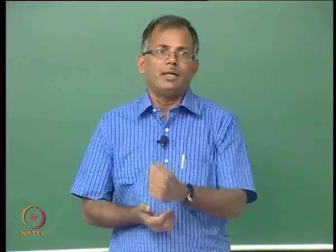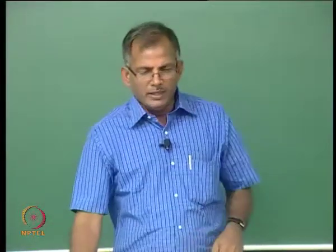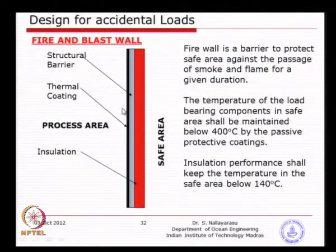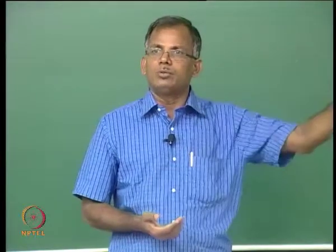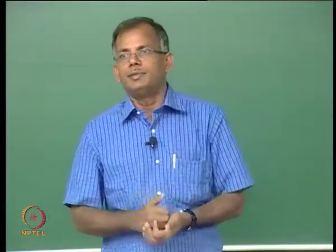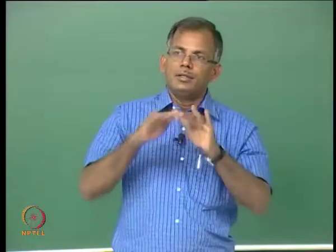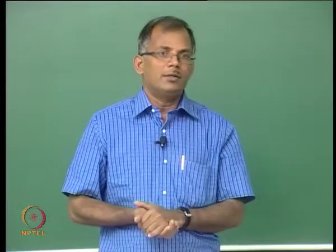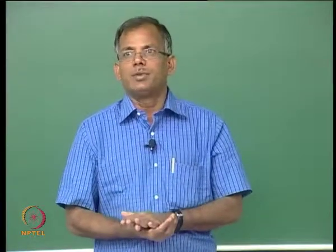The structural barrier performs blast resistance duty — when loading is applied from either side, the structure deforms. When there is fire, the first requirement is to safeguard the structural material from increased temperature. The thermal coating reduces the temperature: if it is 1,000 degrees externally, the structure will only see a reduced value of perhaps 100–200 degrees, because up to about 400 degrees the material deformation remains limited and the stress-strain characteristics remain under control.